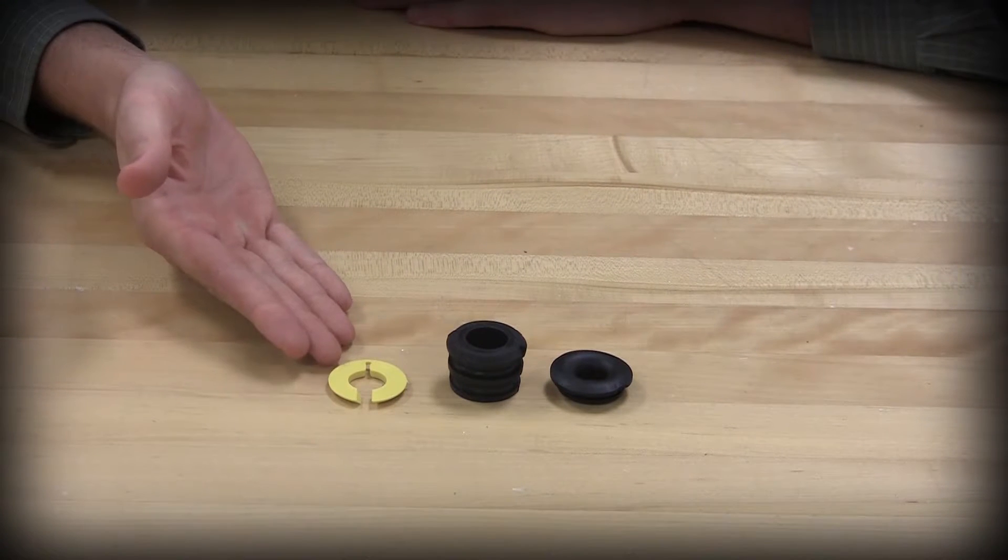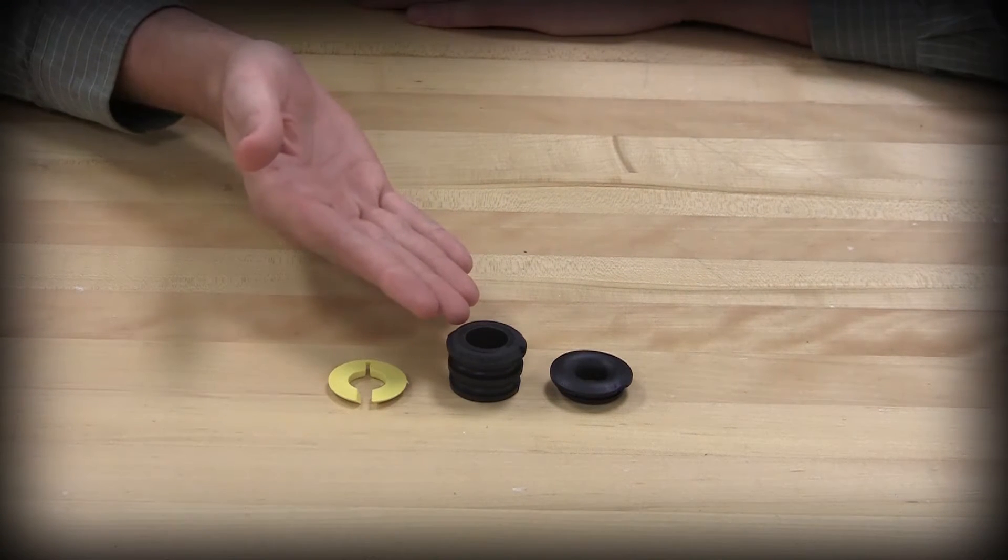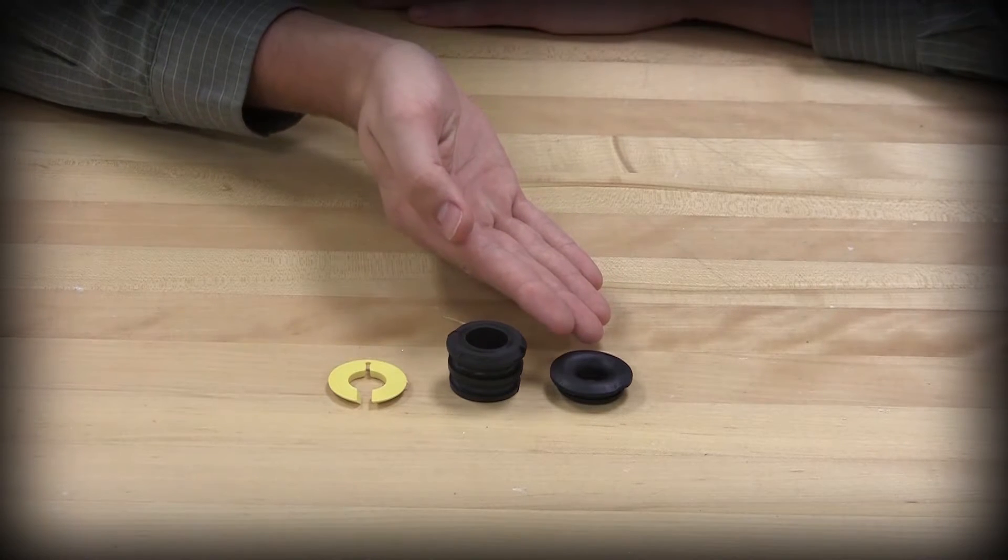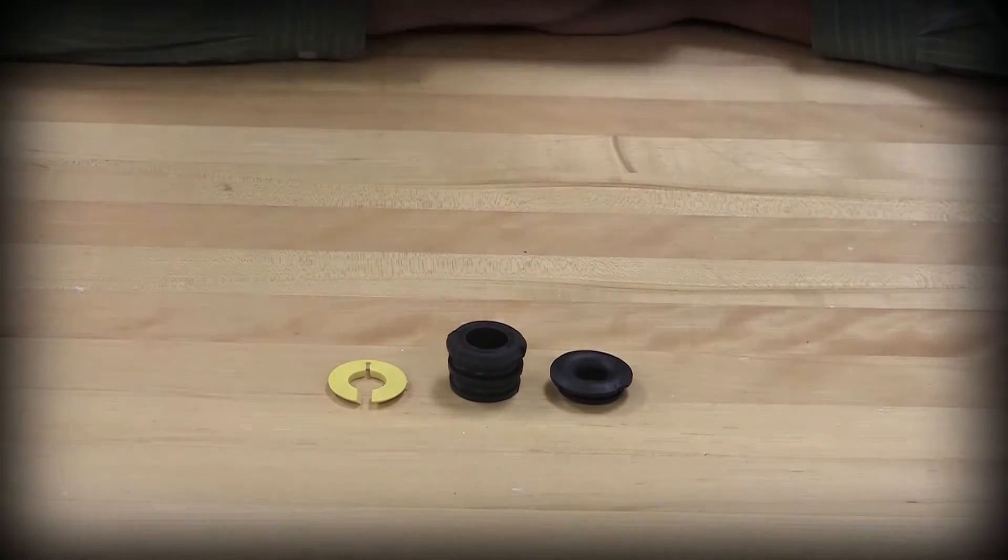The gotcha ring provides strain relief, the rubber bushing also provides strain relief and some sealing around the cable, and the cone seal prevents water and debris from entering the back of the device.